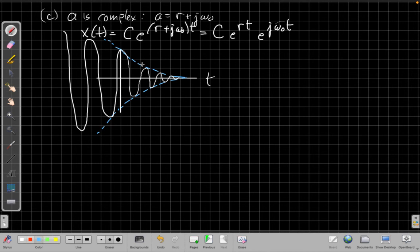But this blue dash thing is the envelope. This is e^(rt), assuming that r is less than zero, so that it's decaying away. And this thing inside is oscillating, where the period T is 2π/ω₀. So it's not strictly a periodic signal because the amplitude is always decaying, but we see this oscillation repeats.